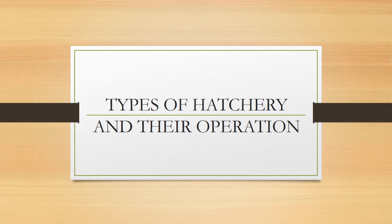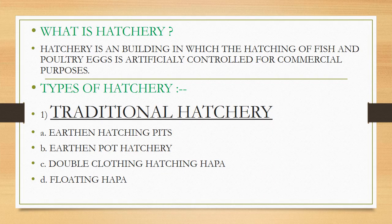Our today's topic is about types of hatchery and their operation. A hatchery is a building in which the hatching of fish and poultry eggs is artificially controlled for commercial purposes. Types of hatchery include: traditional hatchery, modern hatchery, and Chinese hatchery. The traditional hatchery has four types: earthen hatching pits, earthen pot hatchery, double cloth hatching hapa, and floating hapa.